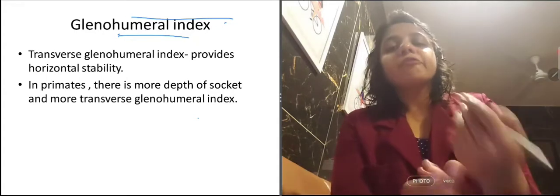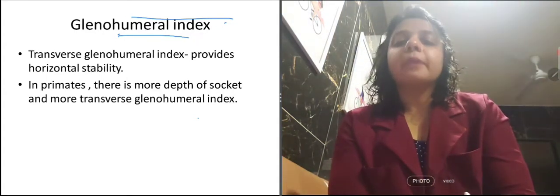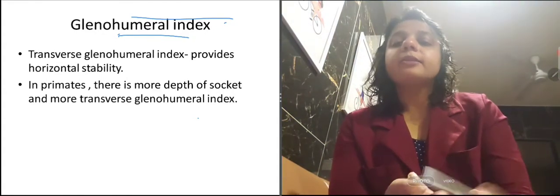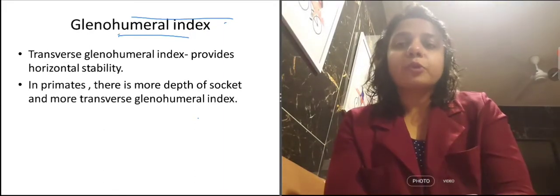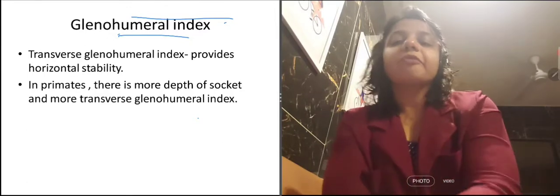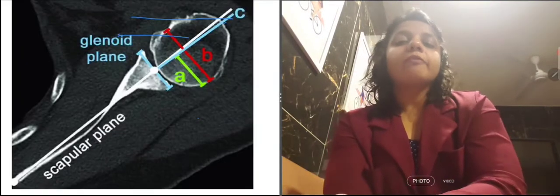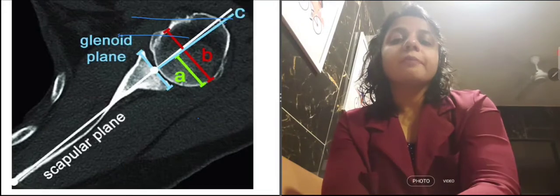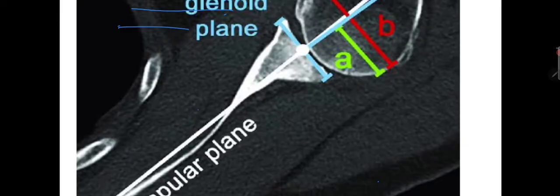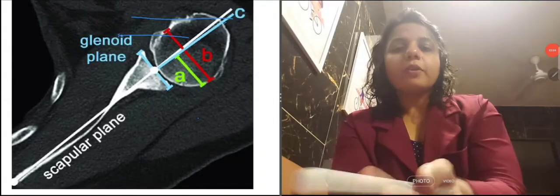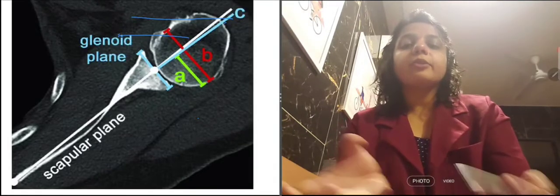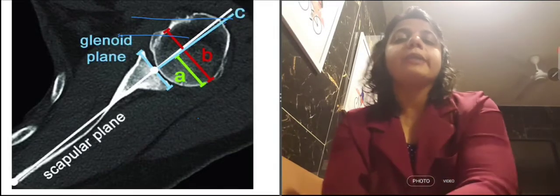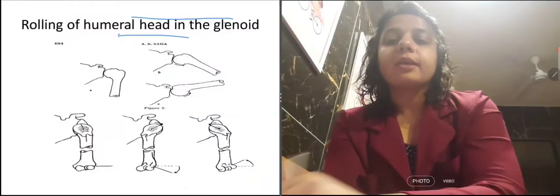In primates, everything favors more stability of the shoulder joint — that is, more depth of the socket, more transverse glenohumeral index, and more retrotilt of the glenoid. Everything is favoring stability. The picture shown here demonstrates how the glenohumeral index is measured — how we take the transverse diameter of the glenoid and humerus.